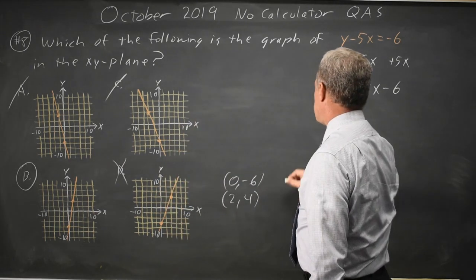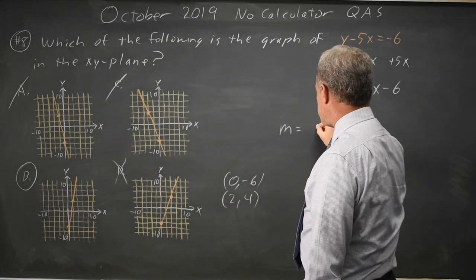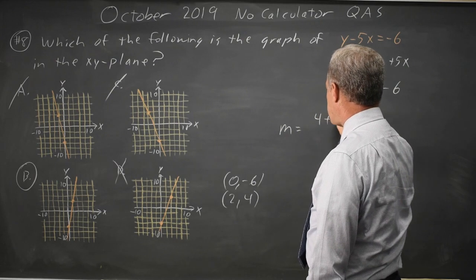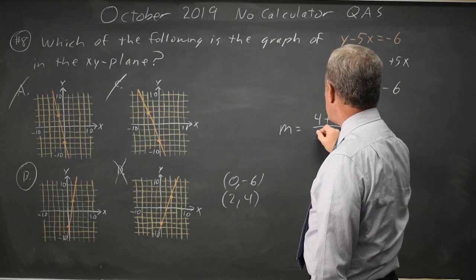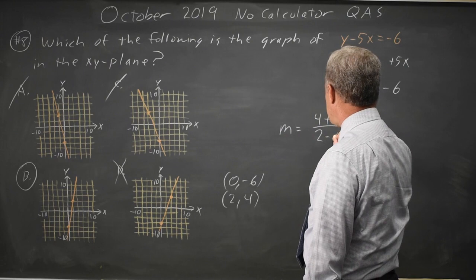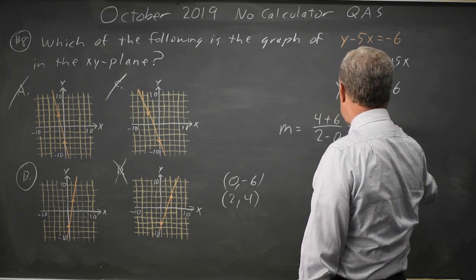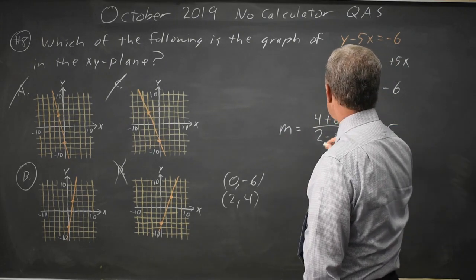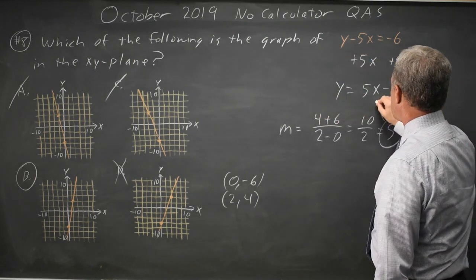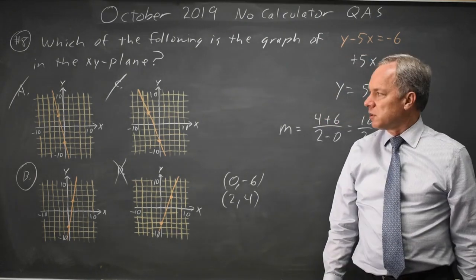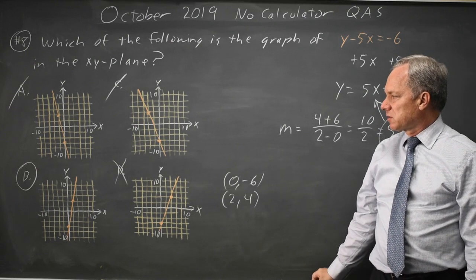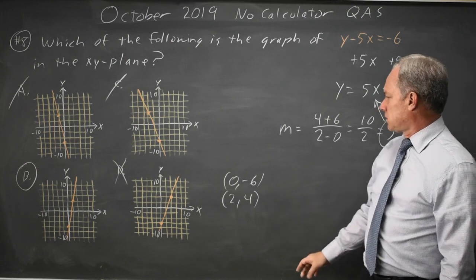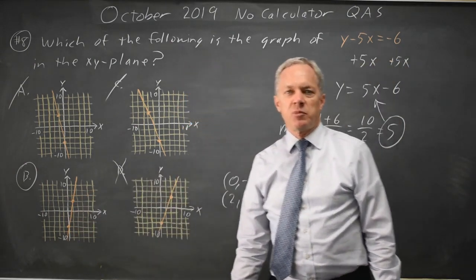So my slope there is the difference in the y's, 4 minus negative 6 is 4 plus 6 is 10, over the difference in the x's is 2 minus 0. So that's 10 over 2 equals 5, which is the slope I see in my equation. So 5 is the correct slope for choice B, and B would be the answer.